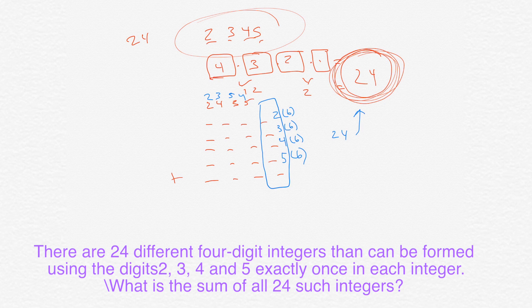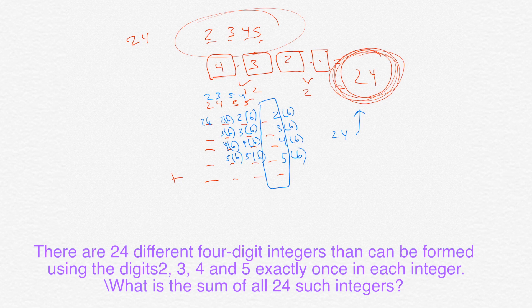And then the same thing with the tens column — you're going to have a 2 that appears six times, a 3 that appears six times, a 4 that appears six times, and a 5 that appears six times. The same with the hundreds column, and then the same with the thousands column.